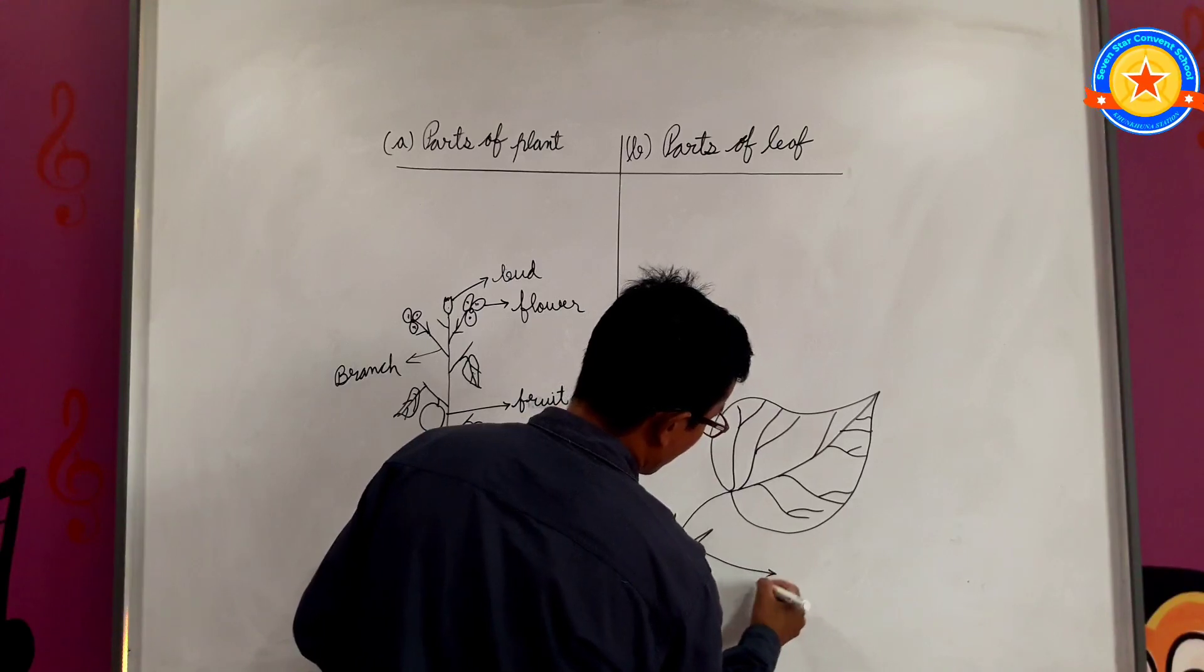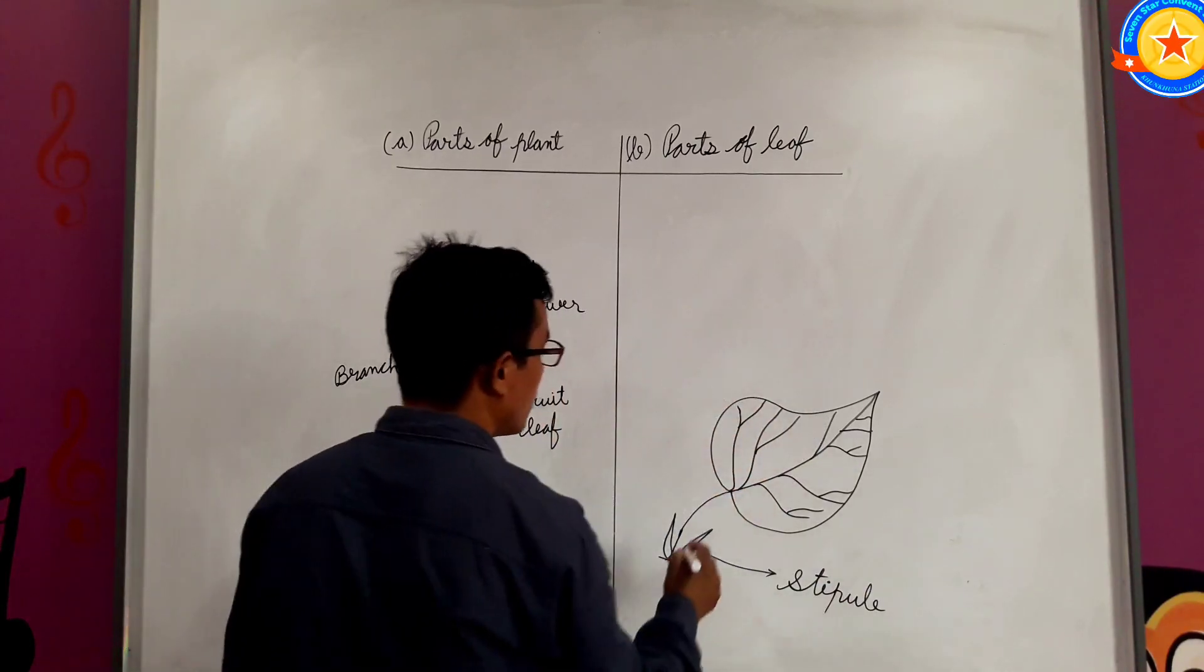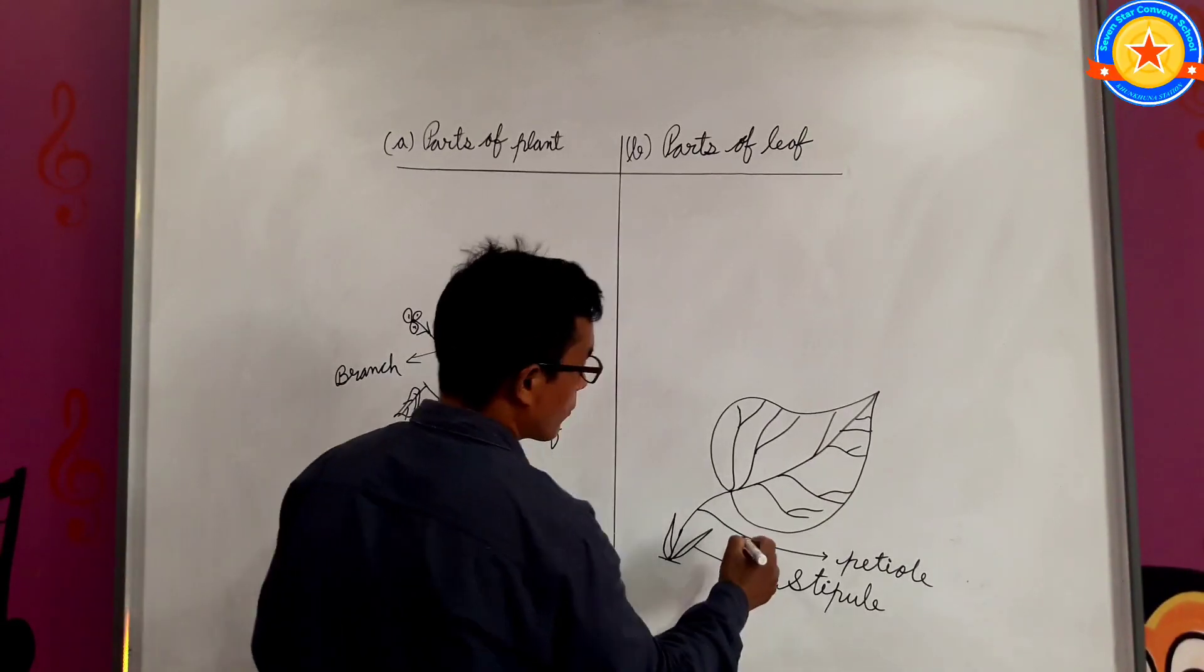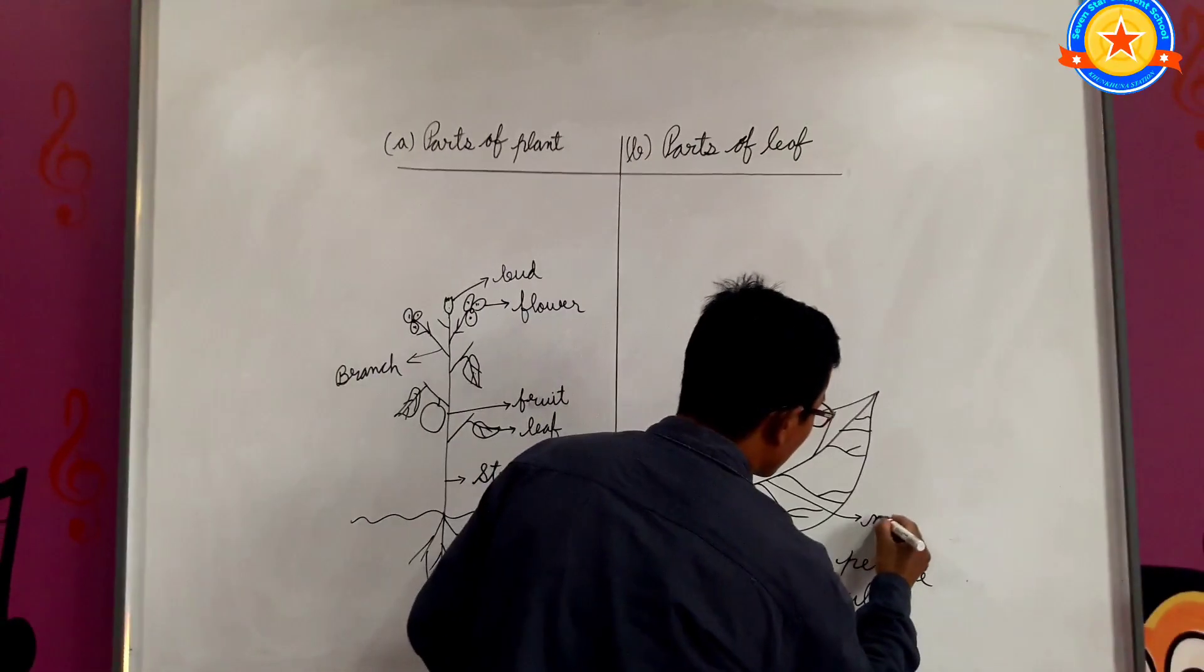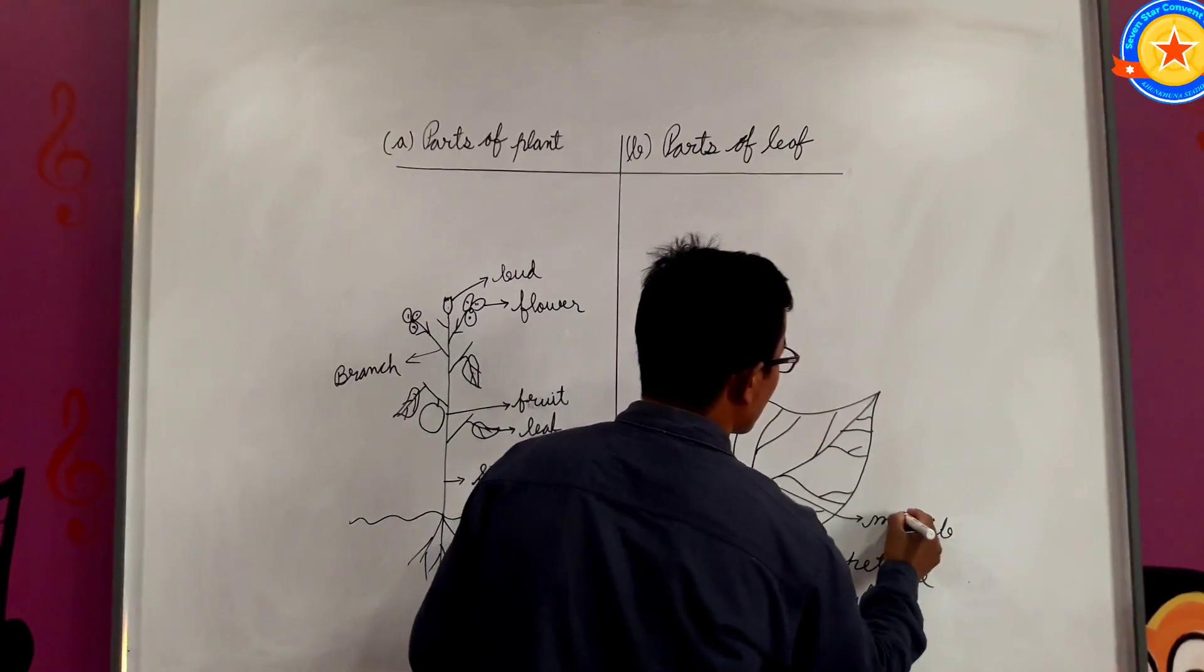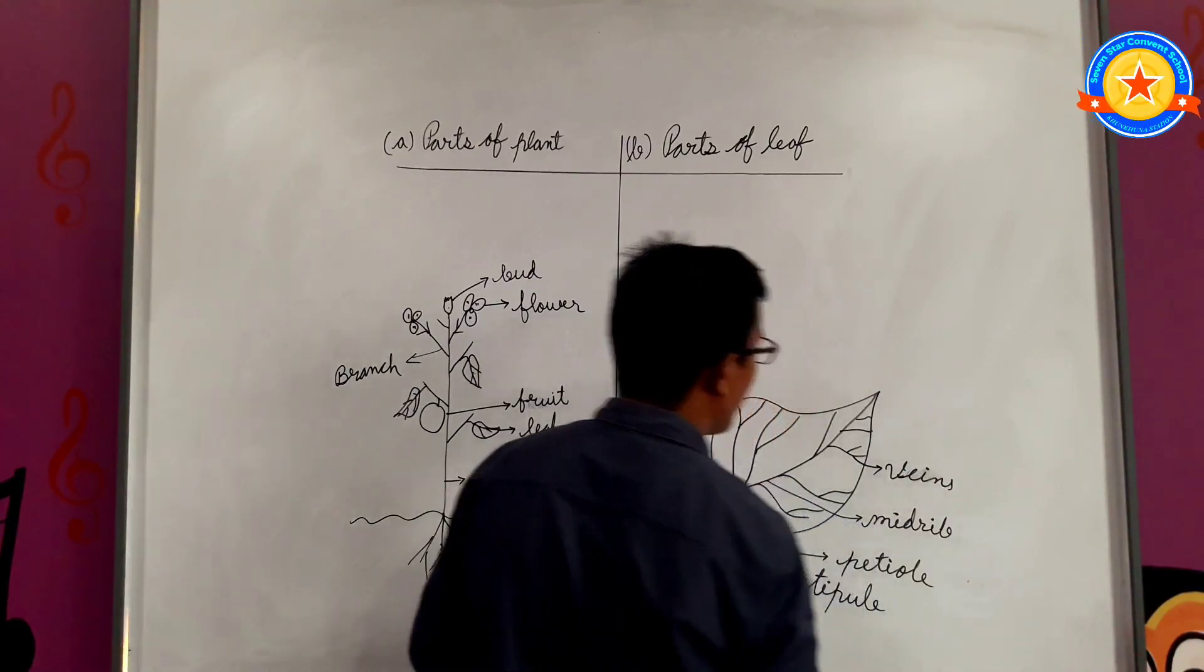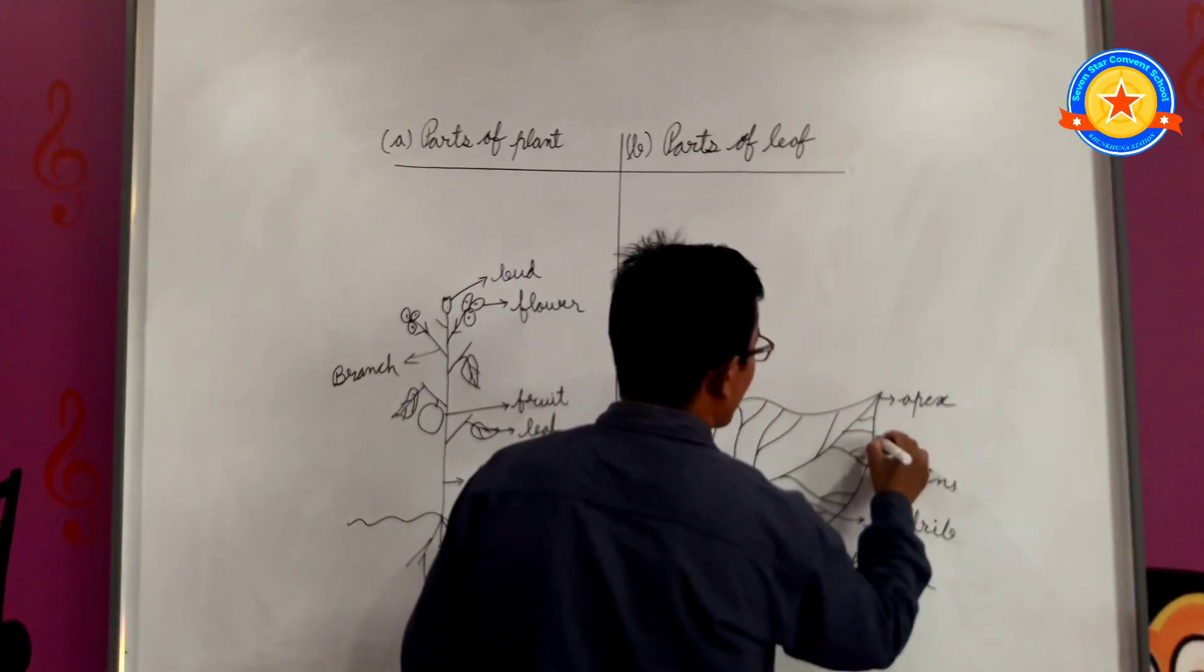This is called stipule. And this is called petiole. And this is midrib. And this is vein, veins. And this is called apex. And this is margin.